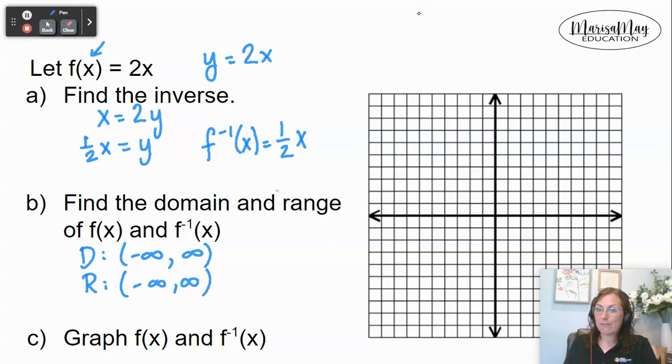Now let's draw a graph of our function and our inverse. We'll begin with the function. y equals 2x is a line with a y-intercept of zero. And my slope is 2. So I'm going up 2 over 1, up 2 over 1. And this is my function.